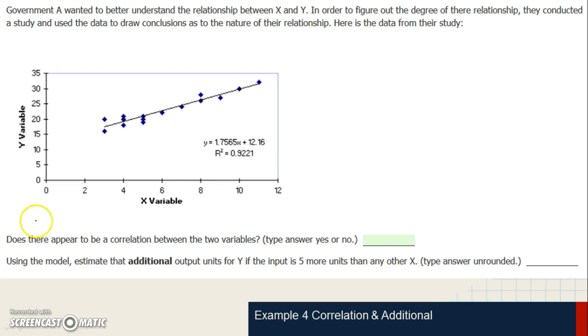Does there appear to be a correlation between the two variables, type yes or no? Well, we can see these variables here. We can see there's a straight line through it. So yes, there definitely appears to be a correlation.